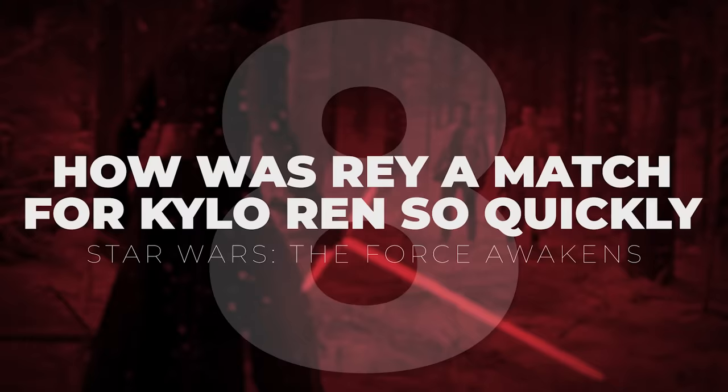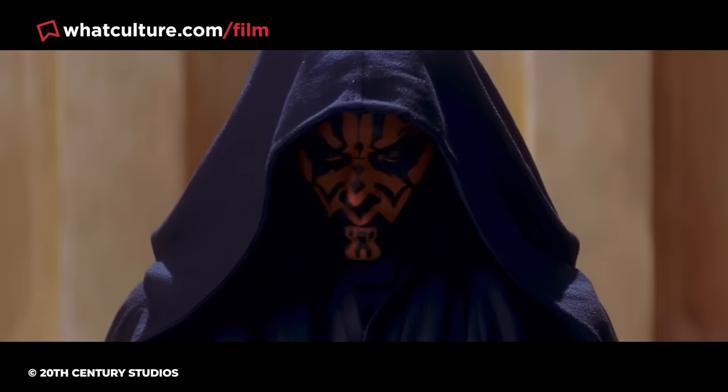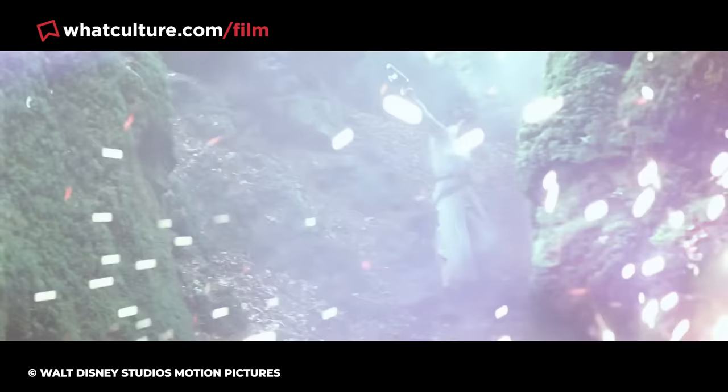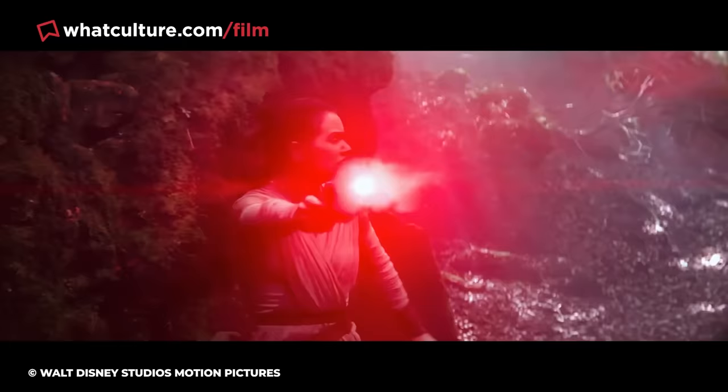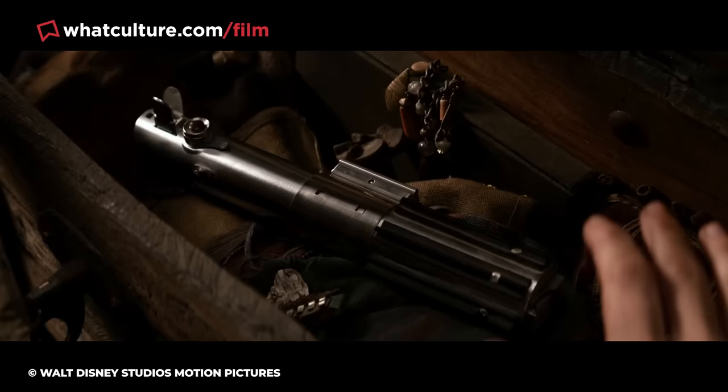Number 8: How was Rey a match for Kylo Ren so quickly in Star Wars Episode VII: The Force Awakens? Throughout the history of the Star Wars universe, there have been countless powerful characters introduced, not all of them created equally. This was certainly the case with Daisy Ridley's Rey and Adam Driver's Kylo Ren. By the end of the trilogy, Rey Skywalker became an incredibly powerful Jedi, but it took a journey to get there. Much like Luke Skywalker, in her first appearance she was a novice in the Jedi arts with a lot to learn, yet she was able to stand toe-to-toe with Kylo Ren in her first lightsaber fight experience.